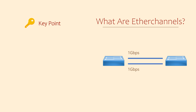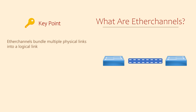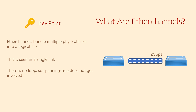EtherChannel is a technology that takes two or more physical links and bundles them into a single logical link. So in that case where we had two links between a switch, we could configure them as an EtherChannel and they would act like a single link with up to 2GB of bandwidth. And because it appears as a single link, Spanning Tree wouldn't block anything, so both physical links can be active at once. If one physical link fails, the EtherChannel still works as normal, with diminished bandwidth of course.